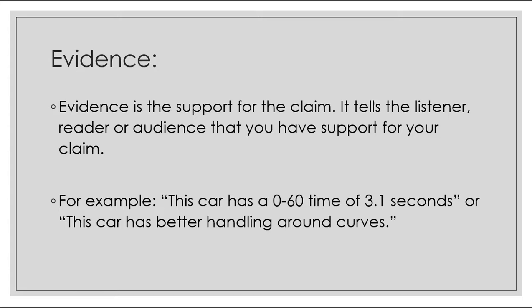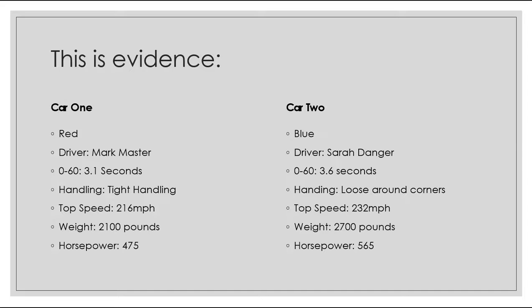Evidence is the support for that claim — it's the proof that you have that your idea is correct or at least worth thinking about. For example, green had the evidence that car 1 had a 0-60 time of 3.1 seconds and better handling around curves. Blue had the evidence that he liked the driver and thought that blue cars are faster cars. Neither of them used everything, and you won't always use all the information available. It's up to you to decide first what evidence is true, then what evidence is important.